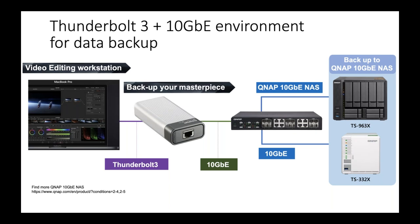Here's a small workflow example: on the left we're using a MacBook Pro as the edit station, connecting to the QNA adapter, then into one of our 10GbE switches, and out to a non-Thunderbolt NAS — still utilizing 10GbE transfer rates. The adapter is only around £150 and switches can be as low as £400, so if the budget is tight or for some reason you can't upgrade to a Thunderbolt NAS, this is a really clean and cost-effective solution to ensure maximum performance from existing kit.